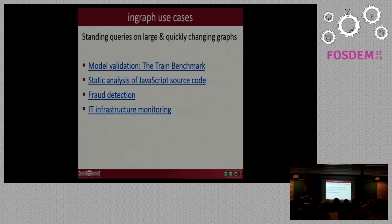So I would like to highlight some use cases. We have a model validation framework called the Train Benchmark which is also built around a railway network, but instead of doing runtime checks, we do checks during the design of it. We have a static analysis framework for JavaScript source code that I will talk about in a minute. And also I think that incremental queries can be beneficial for all use cases where you have standing queries on a large and continuously changing graph. So if you have a fraud graph and you would like to detect fraudulent links or users that are doing fraudulent behavior, then incremental graph queries can be very useful. Also if you have a huge IT infrastructure, that can also be modeled as a graph. And obviously it's changing very quickly and you would like to have a lot of warnings in case something goes wrong.